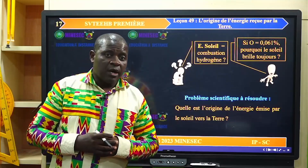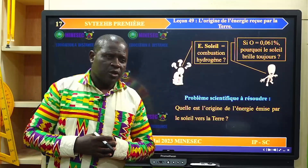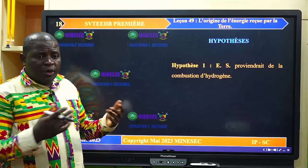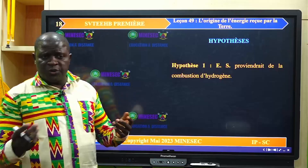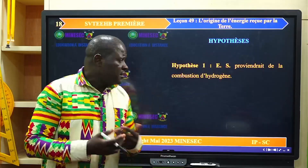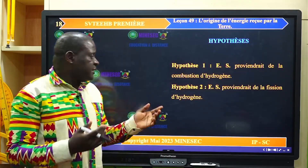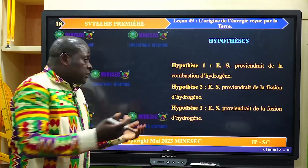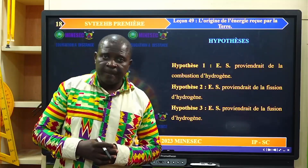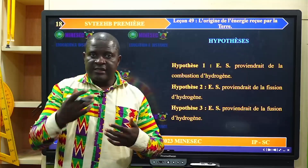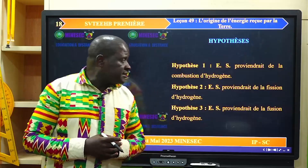Beaucoup pourraient, à partir d'ici, avoir des hypothèses ou des propositions de solutions. On pourrait penser que l'énergie du soleil proviendrait de la combustion d'hydrogène, ou bien que cette énergie proviendrait de la fission de l'hydrogène, ou enfin, une autre hypothèse, l'énergie du soleil proviendrait de la fusion des noyaux d'hydrogène. Nous allons donc, avec les activités d'apprentissage, valider ou rejeter ces hypothèses.